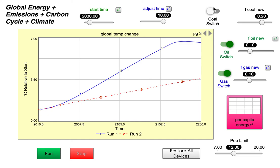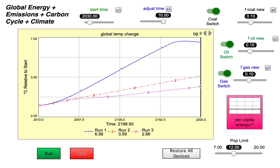Now we'll try scenario B. So we turn the coal switch on and then we reduce the F coal new to 0.1 and run it. So lower temperature. We're using less coal. But we're still at 2.66. So that's too high.